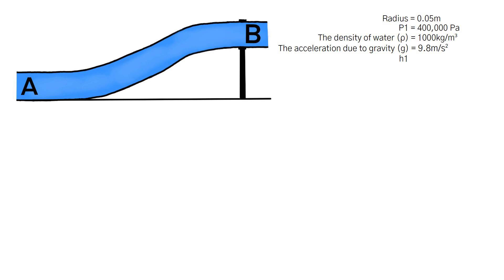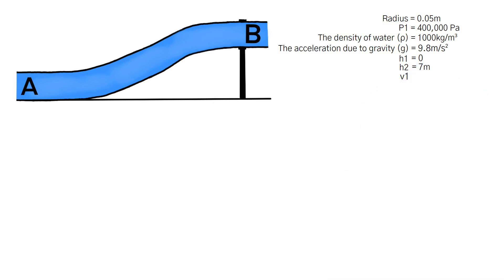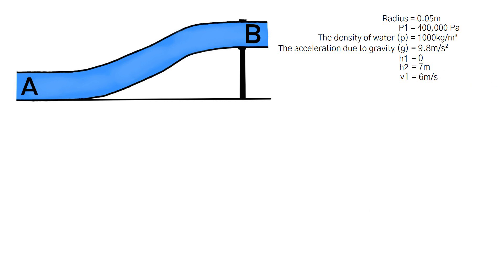H1, the height at point A, equals 0. H2, the height at point B, equals 7 meters. V1, the velocity at point A, equals 6 meters per second, and we're going to find V2 and P2, the velocity and pressure of the fluid at point B.